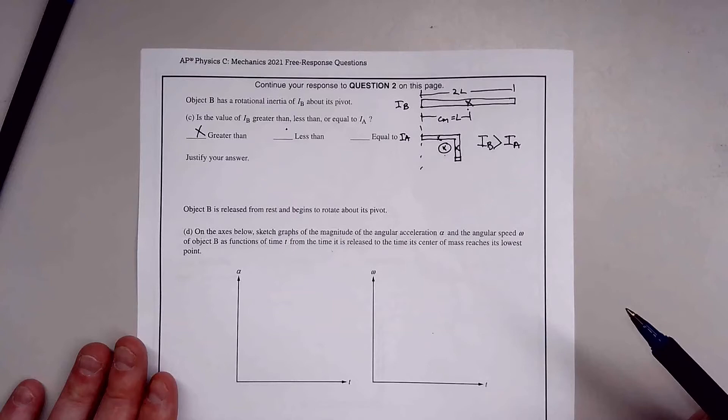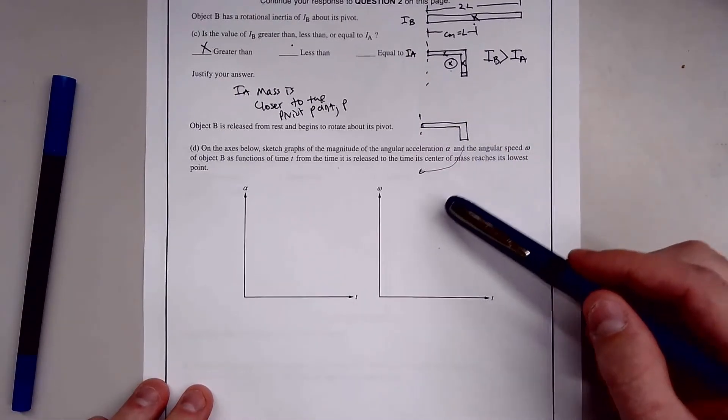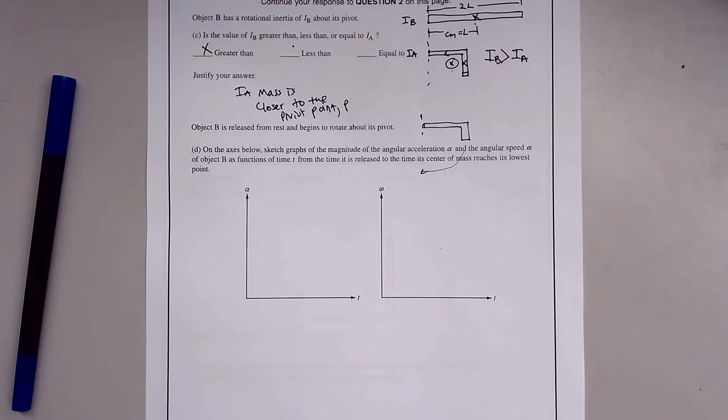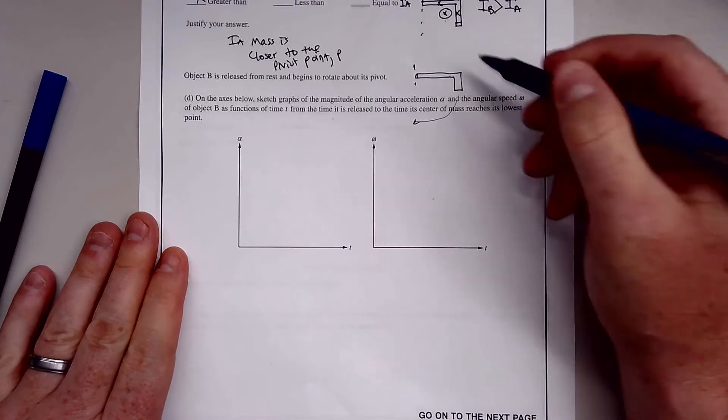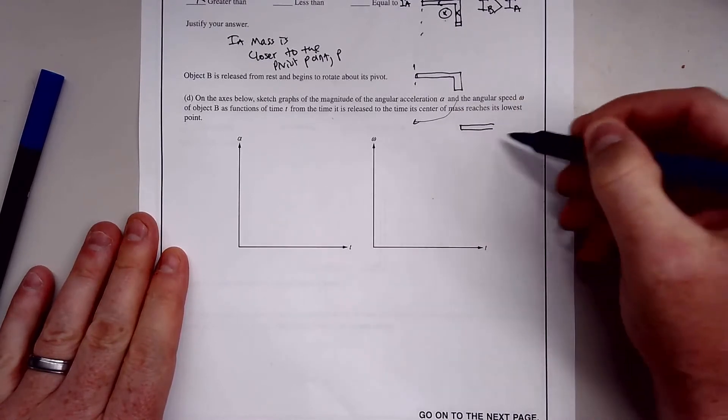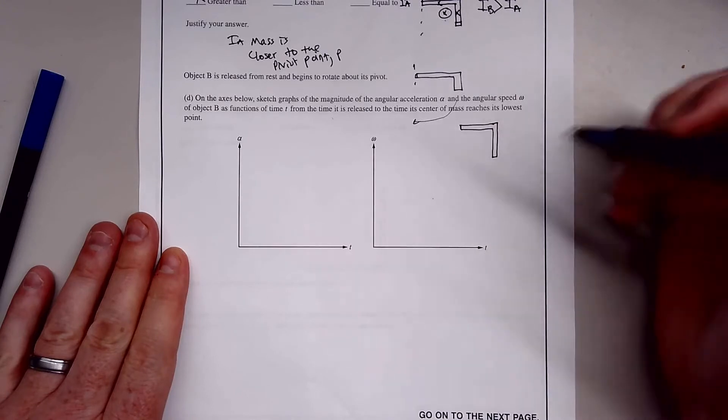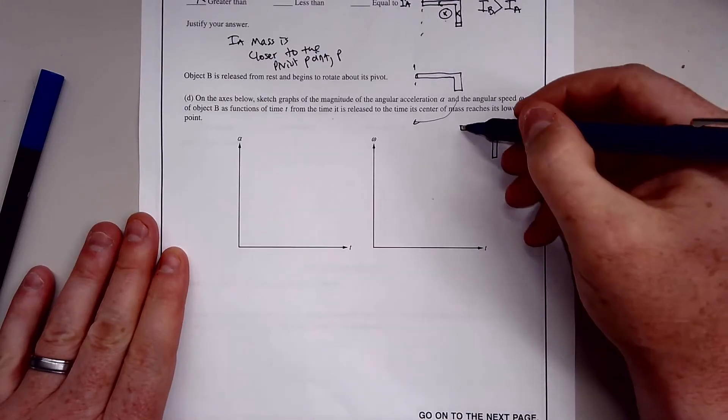Now, object B, this boomerang object we got here, is now released from rest and is allowed to begin to rotate. So now it's going to spin. On the axis below, sketch the magnitude of the angular acceleration and the angular speed. Whenever this object starts to move, I know the initial angular velocity is going to be zero.